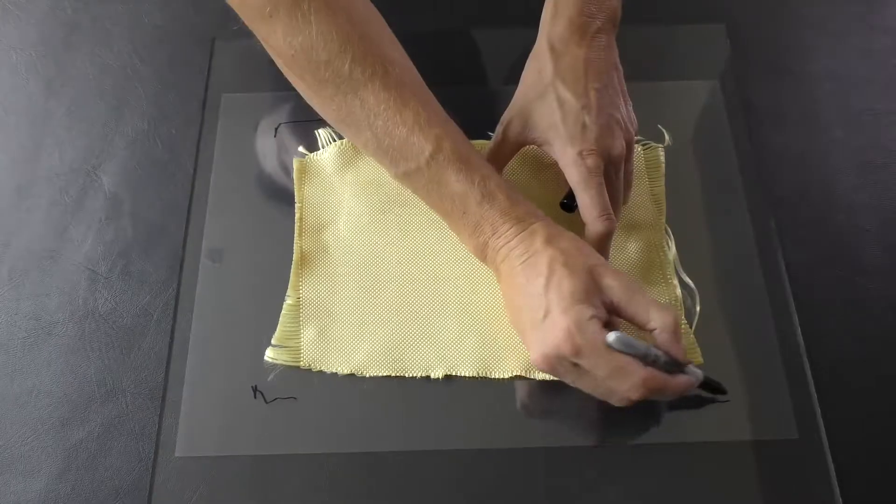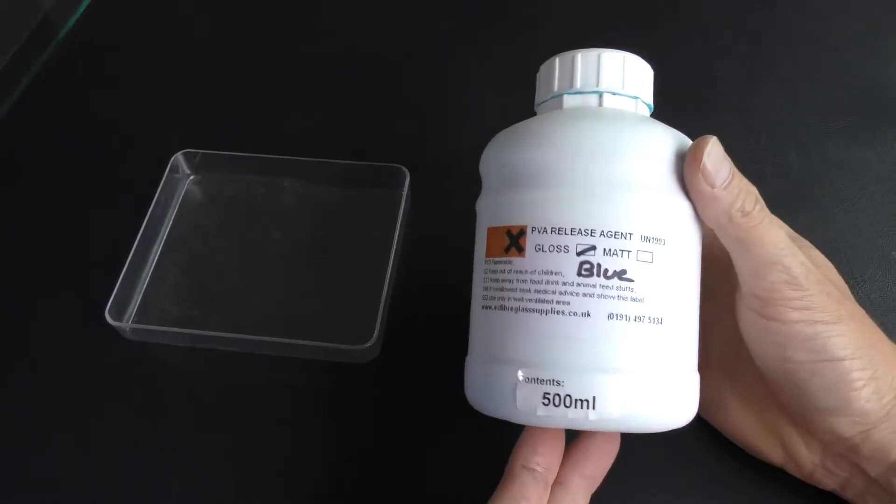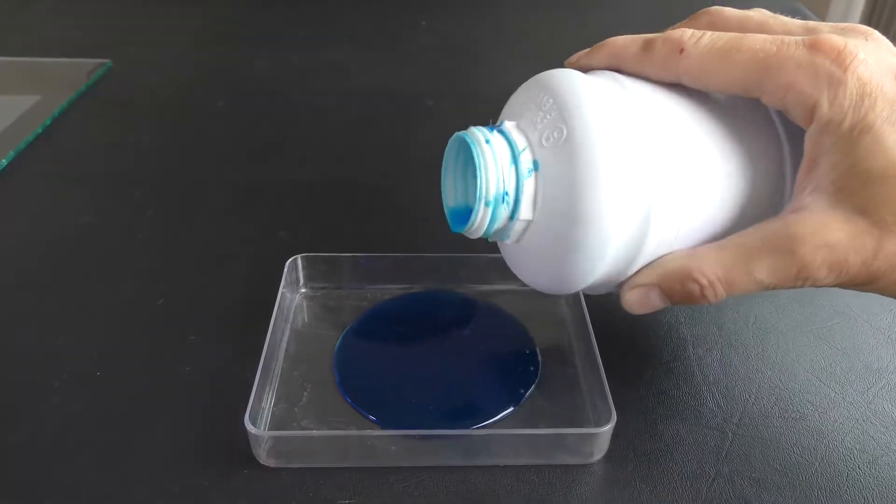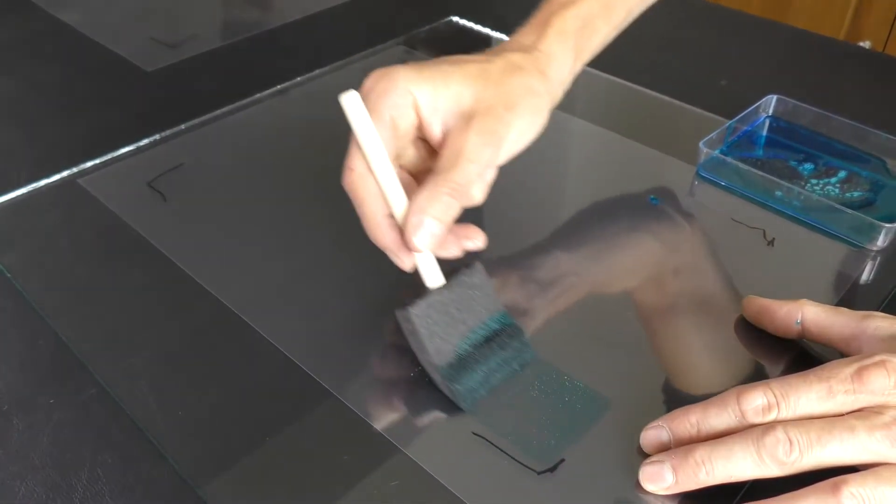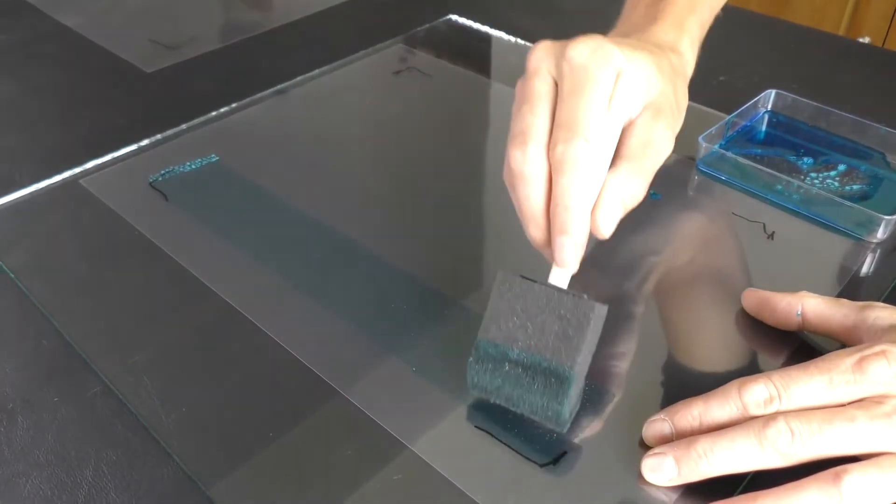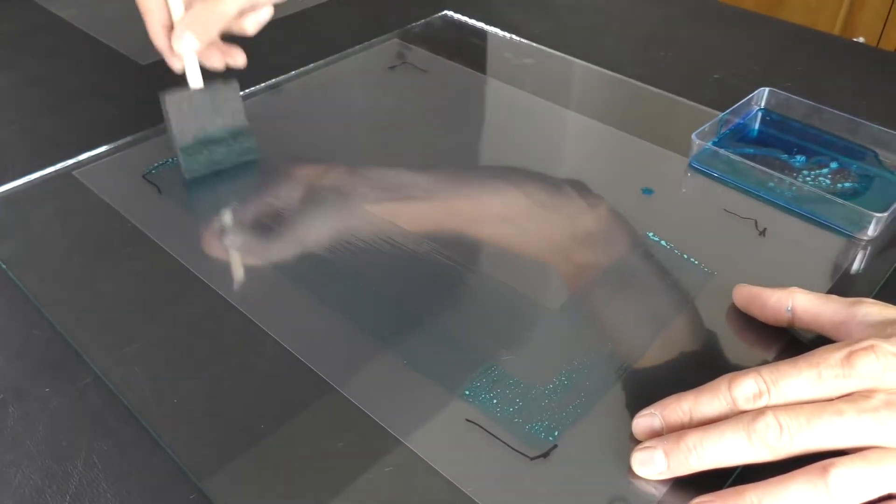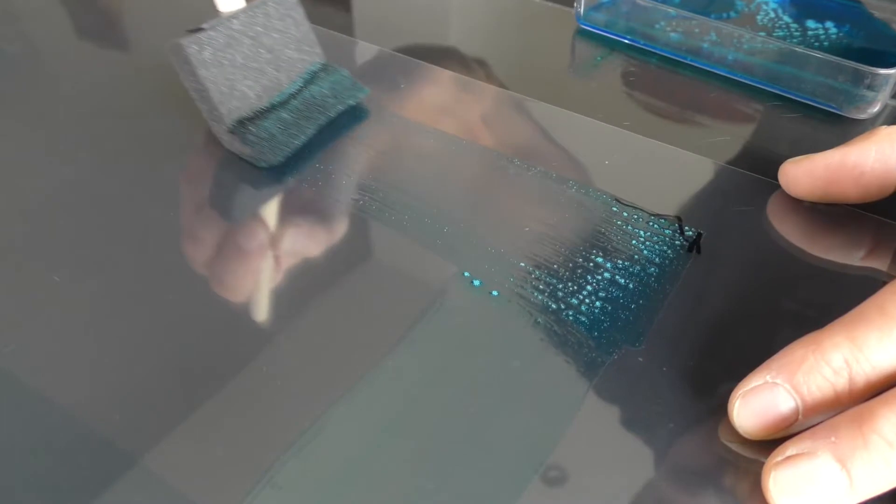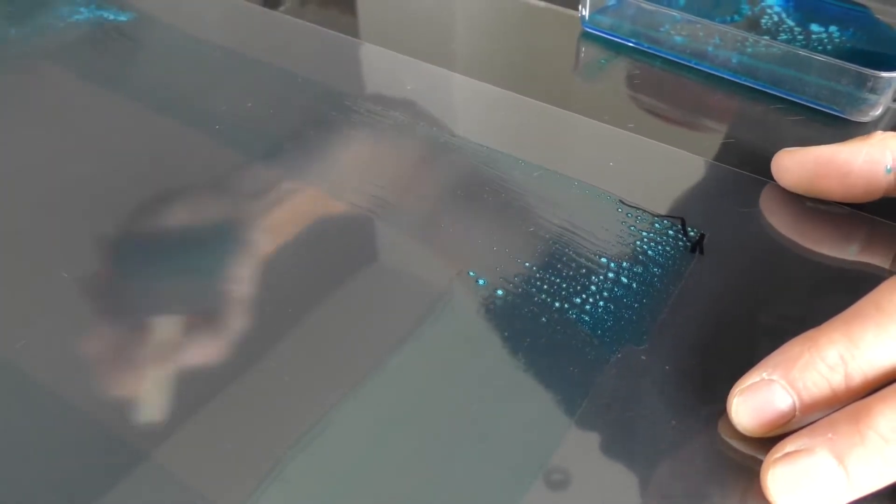After marking the area for the resin it's time for the release agent. This is a PVA version but a release wax also works. I did try cheaper alternatives like WD-40, Vaseline and car silicon and that's how reliable they were. I find a foam brush works best but a cloth application will also do the job at a push.